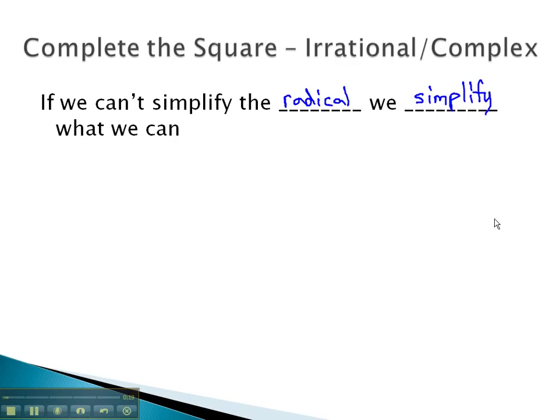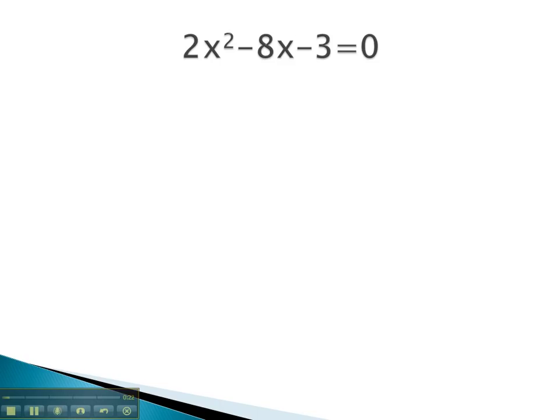For example, in this problem, if we were to solve by completing the square, we first separate the variables from the numbers by adding 3 to both sides. We now have 2x² - 8x = 3.